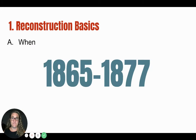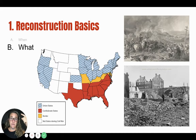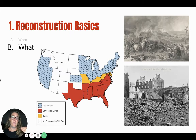As we talk about Reconstruction, let's cover some basics. Reconstruction happened immediately after the Civil War, from 1865 and it ended in 1877. The question was really how do we rebuild the country after the Civil War? The United States was split into two countries — the North or the Union, the United States of America, and then the South or the Confederacy.